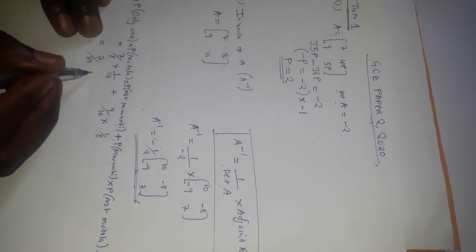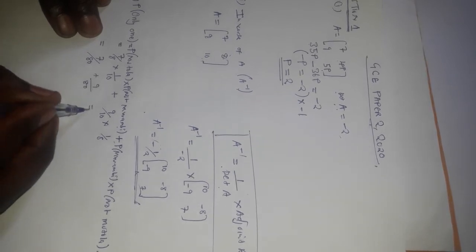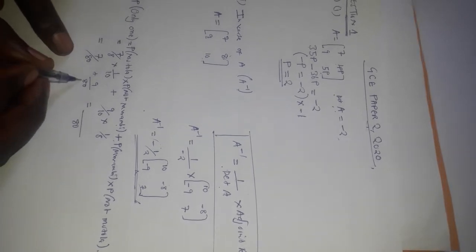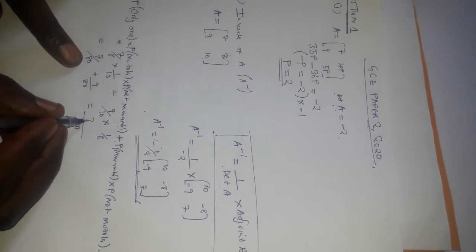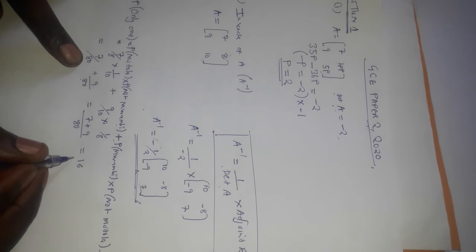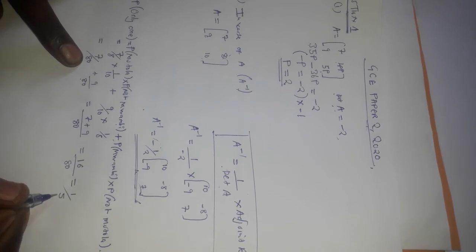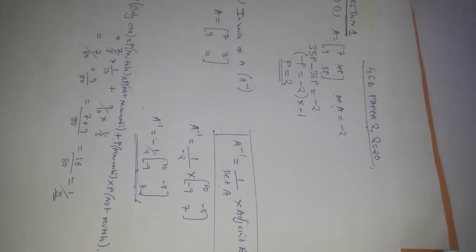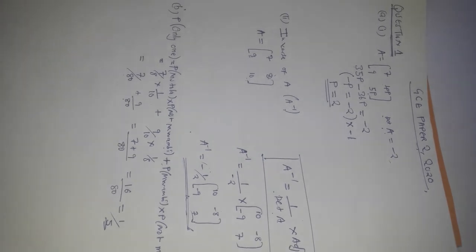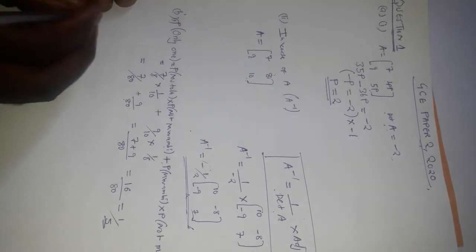This gives us 7 over 80 plus 9 over 80. Since the denominators are equal we can add the numerators: 7 + 9 = 16, giving us 16 over 80, which simplifies to 1 over 5. That is the answer for part B1.